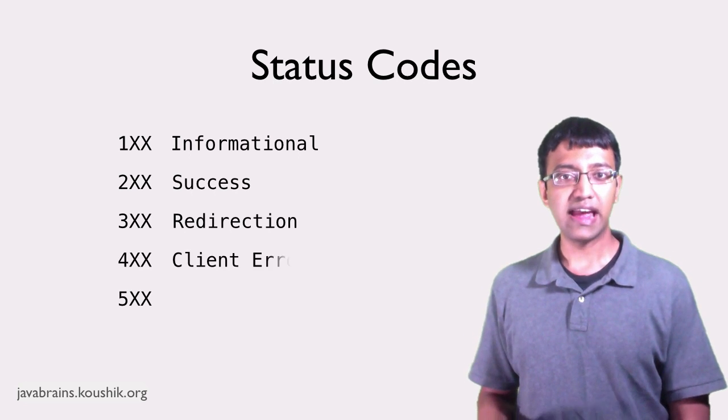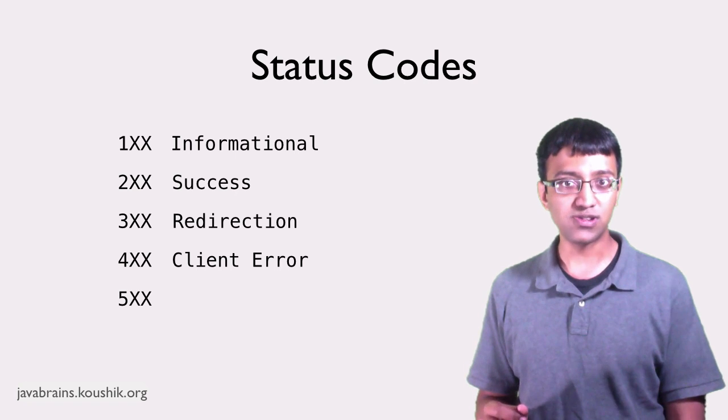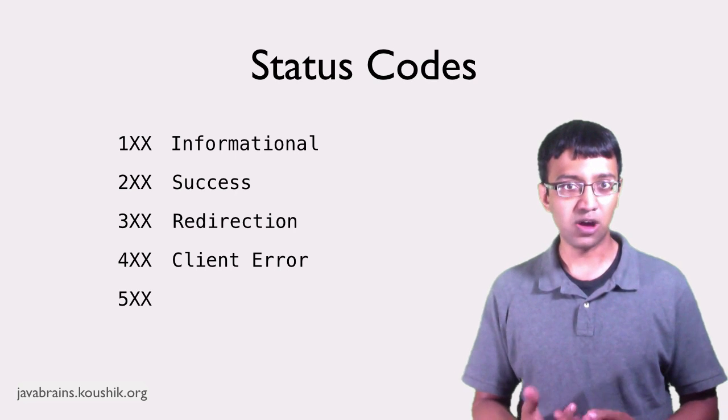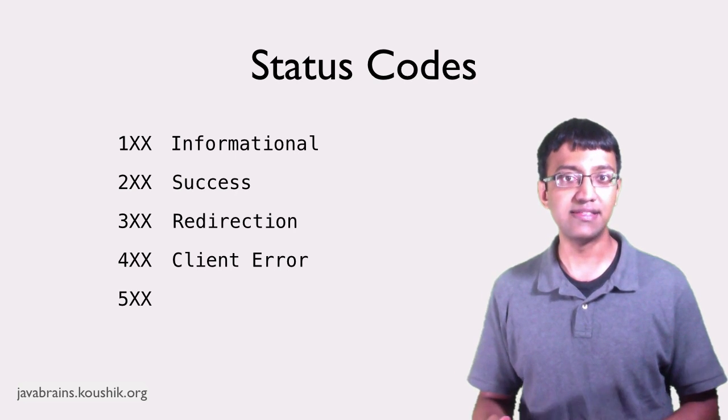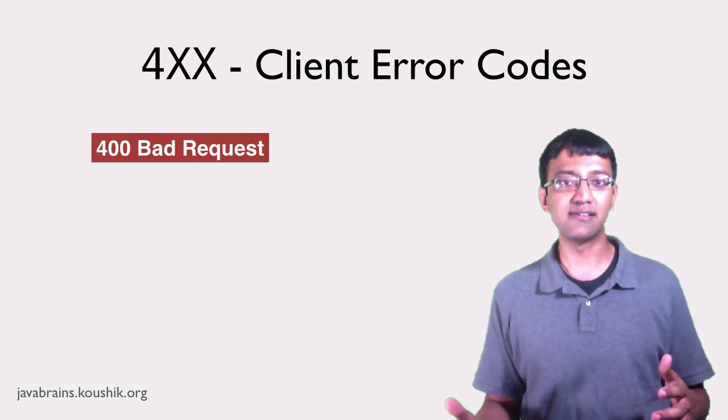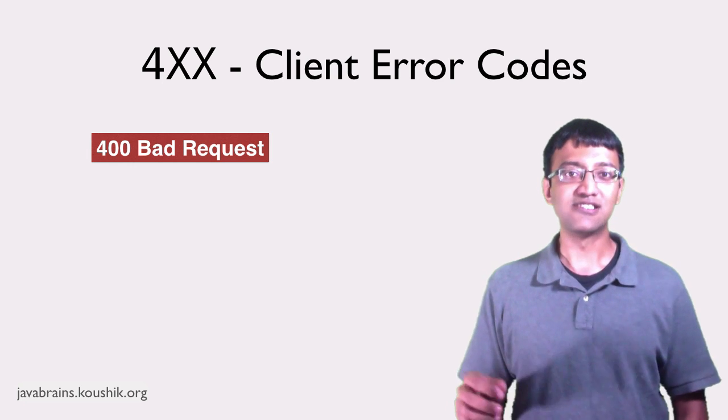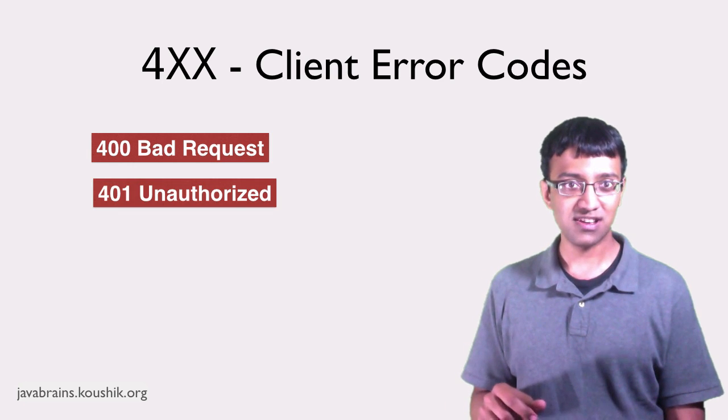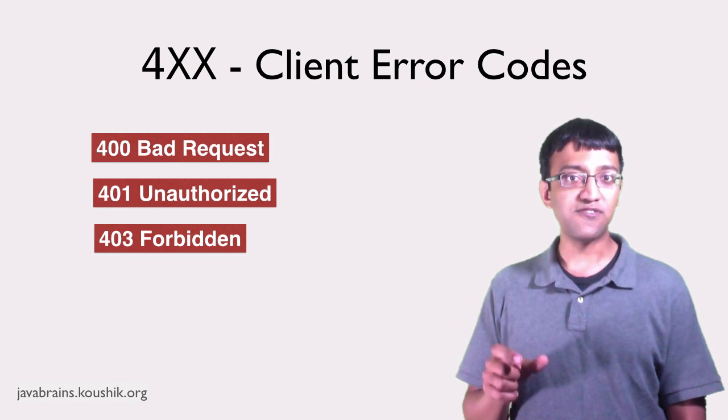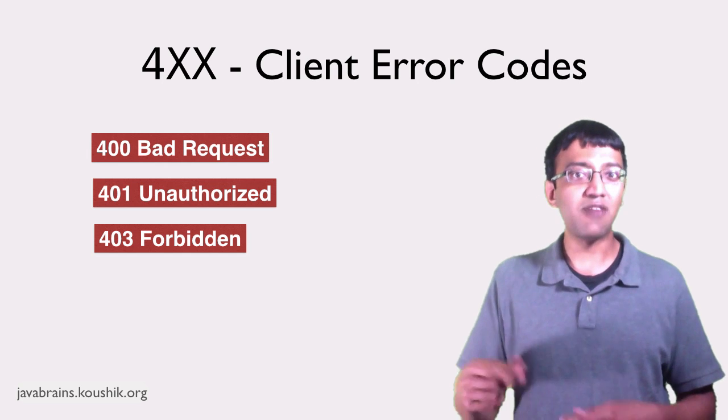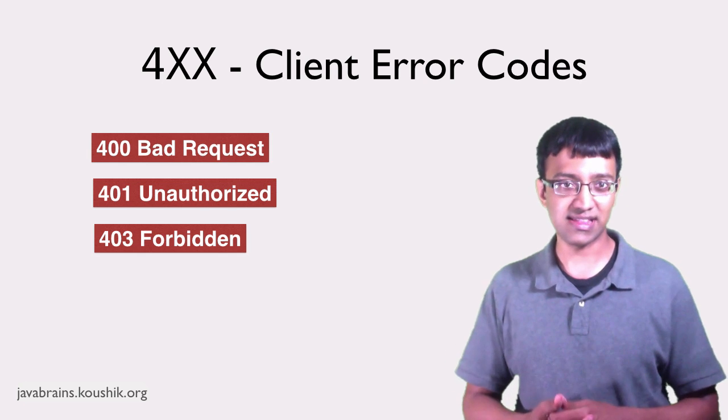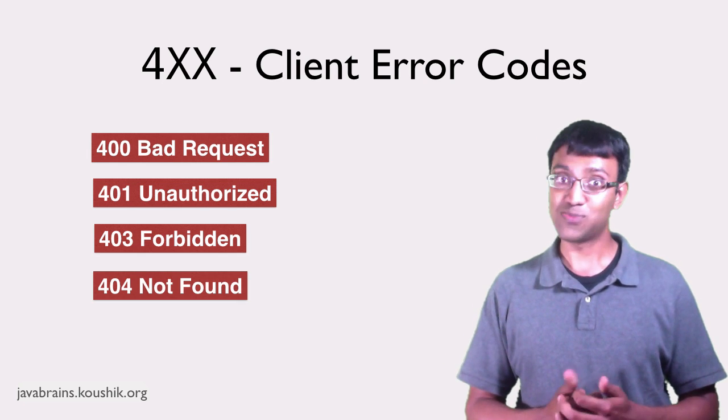So the 400 codes indicate client error. These error codes are returned if the client makes an error in the request. The request syntax could have been incorrect or the client is requesting something that it's not supposed to see. So there is 400 Bad Request, which is a blanket client error. The server is really not able to understand the request. There is 401 Unauthorized, which means that the client needs to sign in or authorize themselves to see the resource. There is 403 Forbidden, which means that the client may have authorized or logged in, but they're not allowed to make this resource request. They don't have the right access or something like that. There's 404 Not Found, no description required.